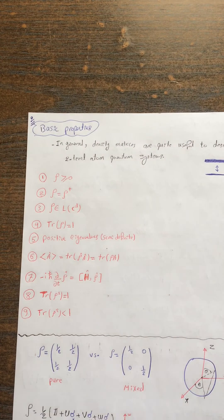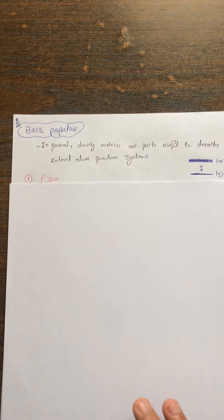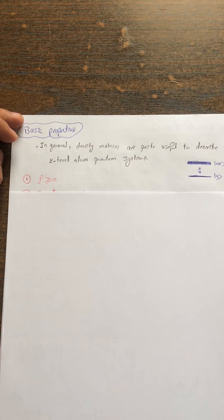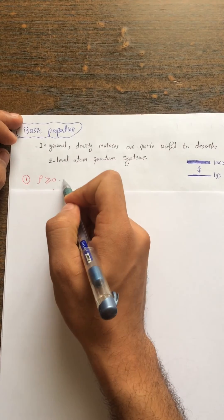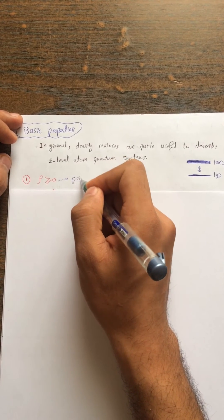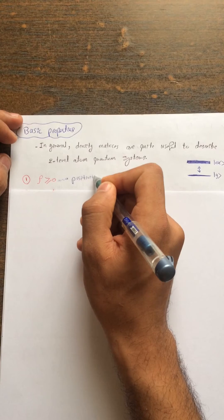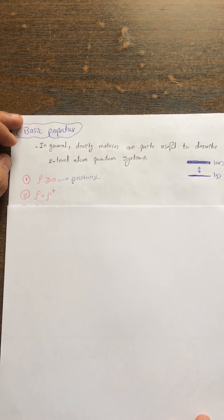Let us get to some basic properties of this density operator. In general, density matrices are very useful when you try to describe quantum states of a two-level atom — the ground state and the excited state together. The first property states that the density matrix is always greater than or equal to zero, which guarantees positive eigenvalues of your system — this is called positivity.